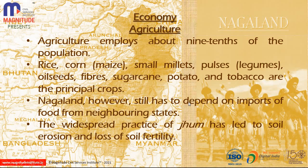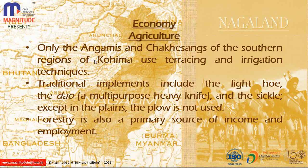The widespread practice of jhum (shifting) cultivation has led to soil erosion and reduced soil fertility. The Angami and Chakesang tribes in the southern region use terracing and irrigation techniques. Traditional implements include the light hoe, multi-purpose sickle, and the plough is used only in plains areas.